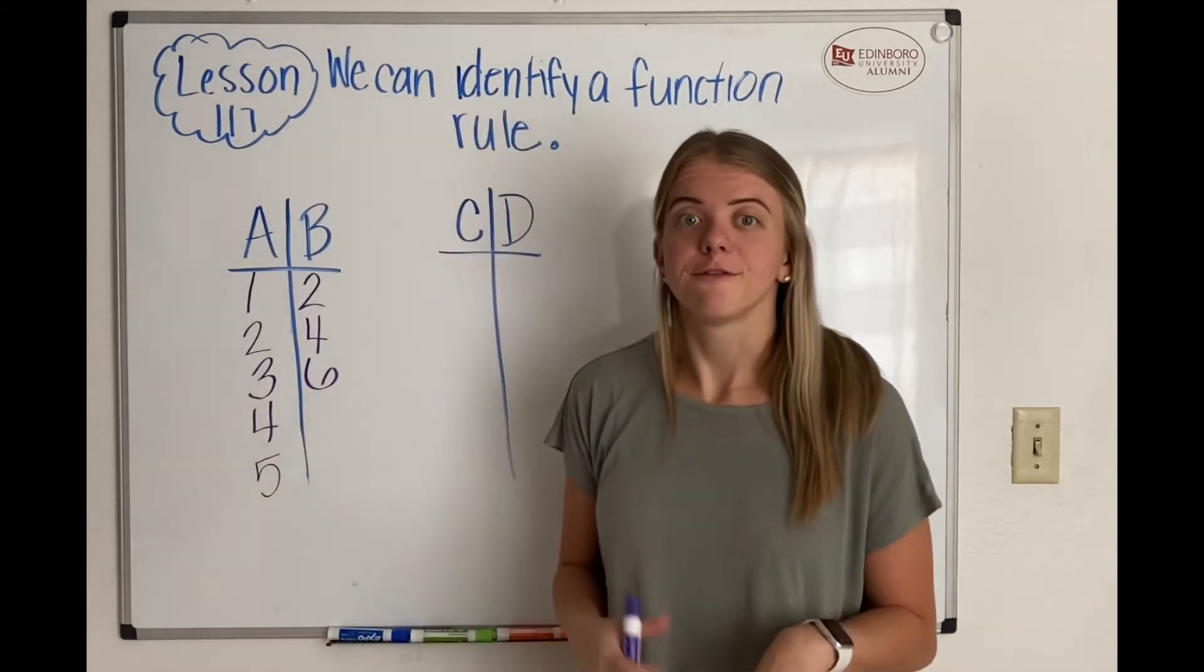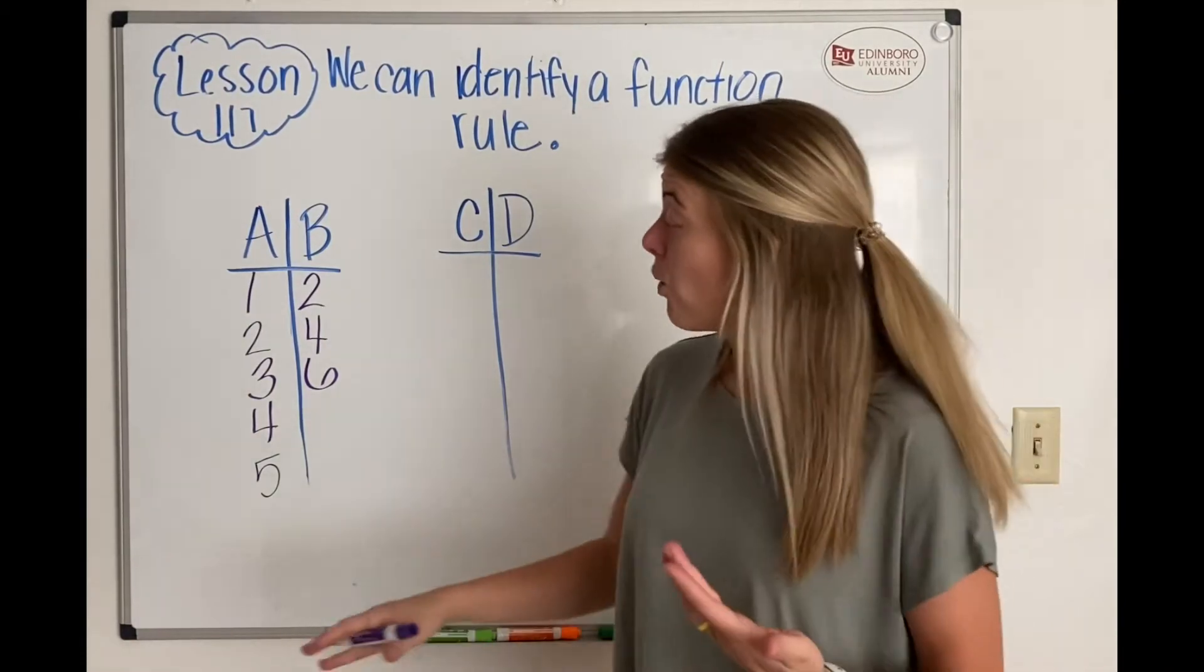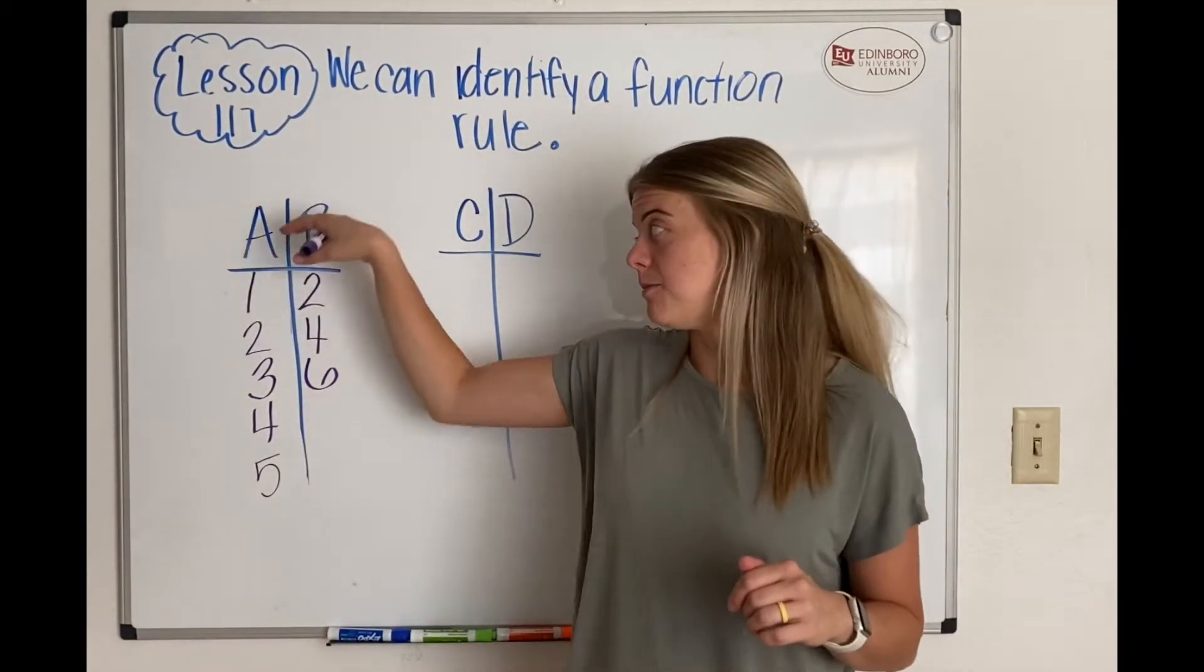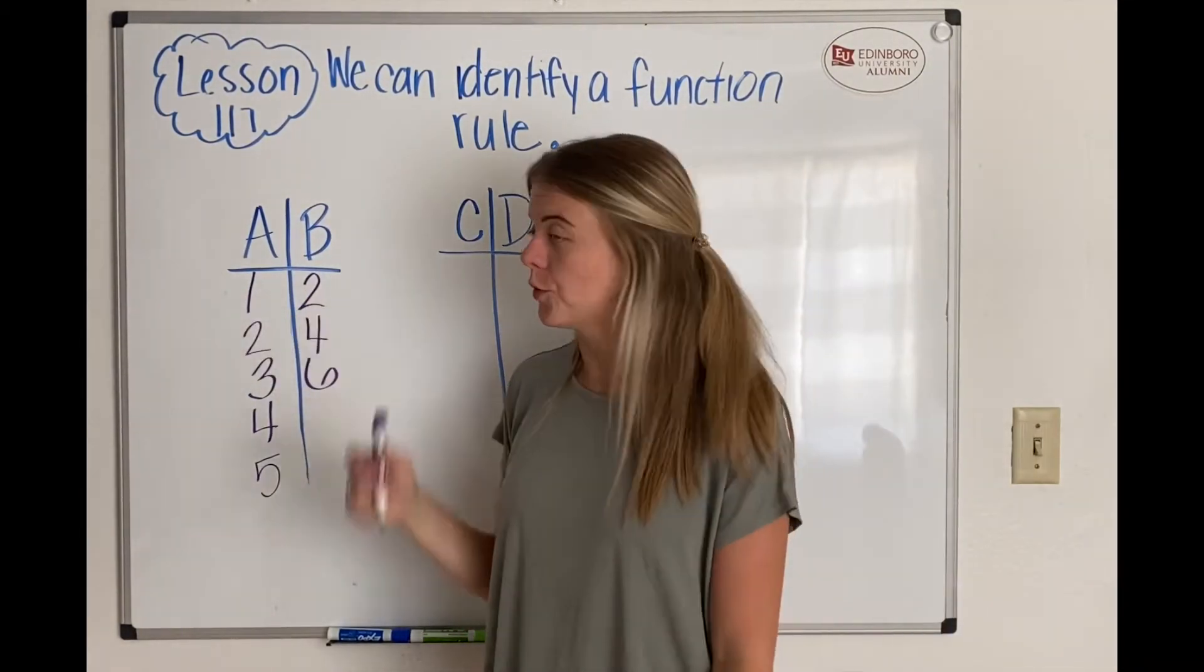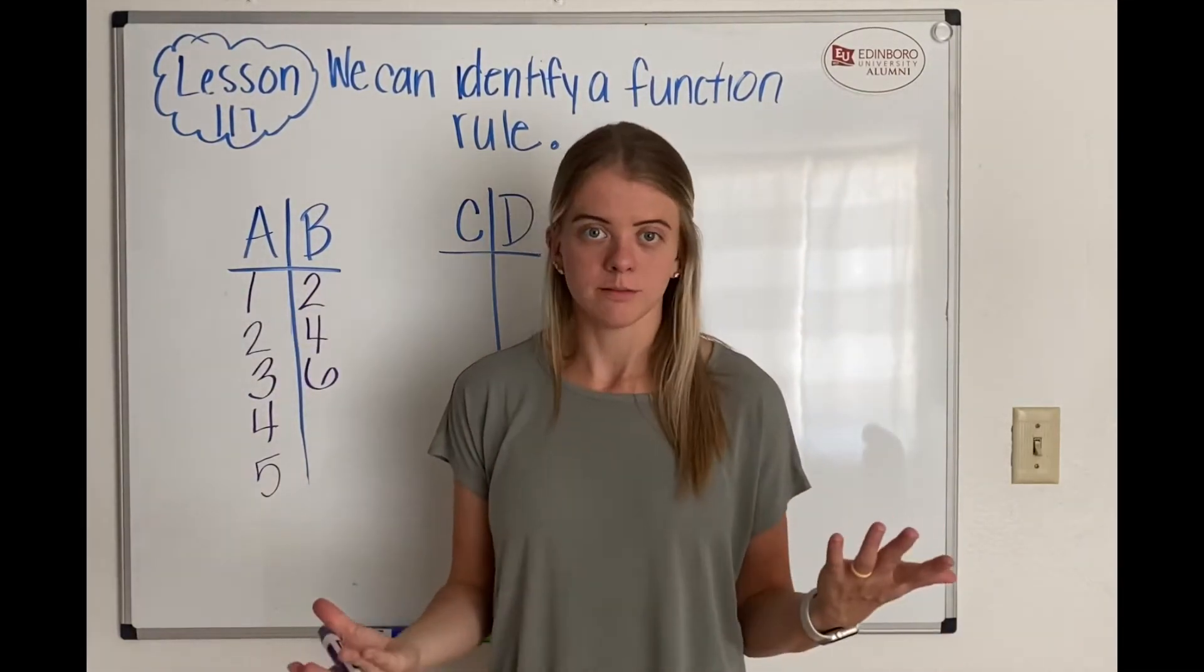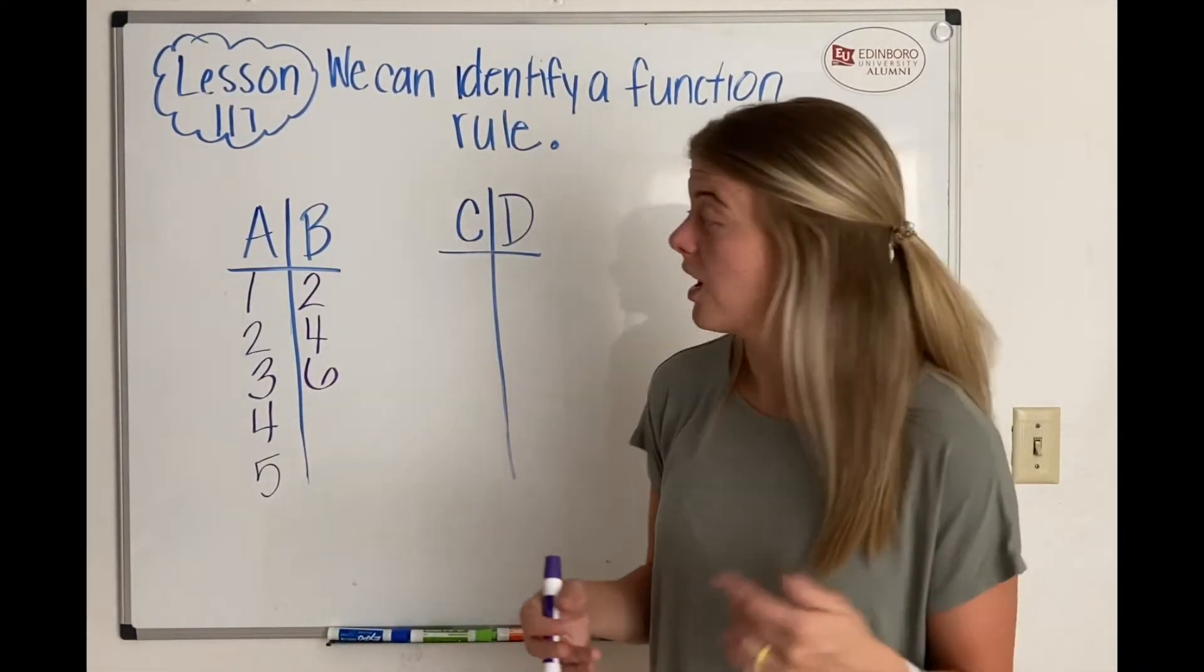So our job is to figure out what the function rule is. How do I get from A to B? Well, let's think of all the ways that we can get from 1 to 2. We can either add 1, but does that rule work for every single one of these? Let's find out.